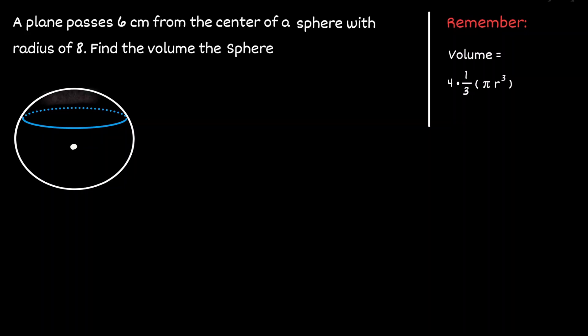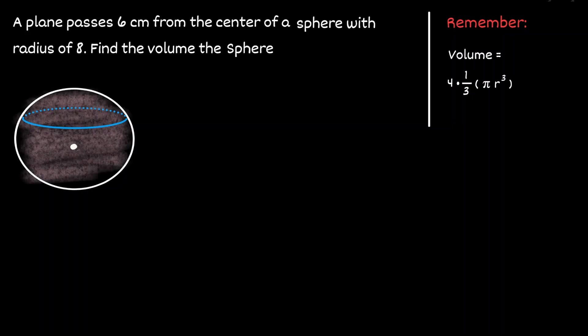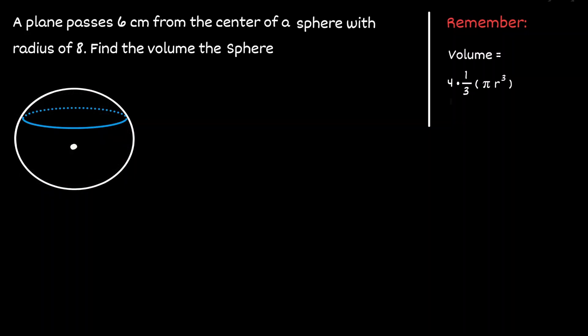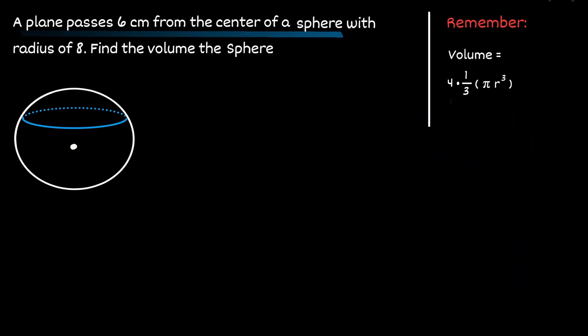In this example, we want to find the volume of the sphere. We have already established an equation for that, and the only unknown is the radius. We are given the information that there is some kind of a plane that is passing six centimeters from the center of the sphere, which we can consider as the plane in the description.